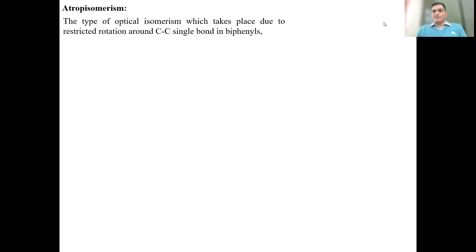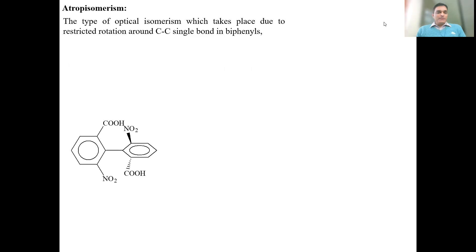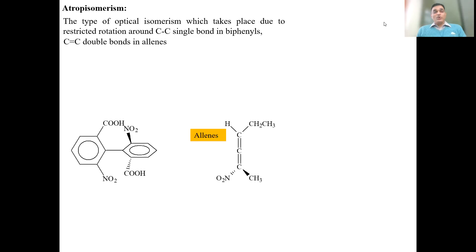Atropisomerism is that type of optical isomerism which takes place due to the restricted rotation around the carbon-carbon single bond. In biphenyls, there are two benzene rings with a single bond in between, so free rotation can occur. This property of atropisomerism only works if we restrict that free rotation. It also takes place in allenes, where two double bonds are present with the same carbon atom — these are called cumulated dienes.